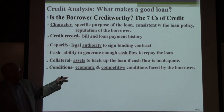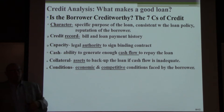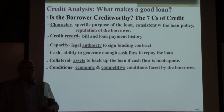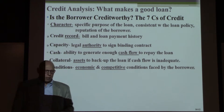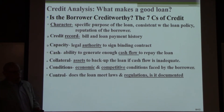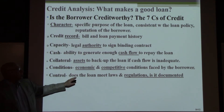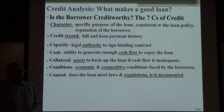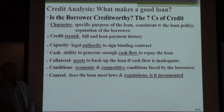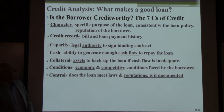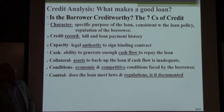Then the conditions — the economic and competitive conditions faced by the borrower. Is the industry strong? Is the company strong? Is demand in the area strong? And then control: does the loan meet the laws and regulations that pertain to the bank? Those are the seven C's of credit worthiness.